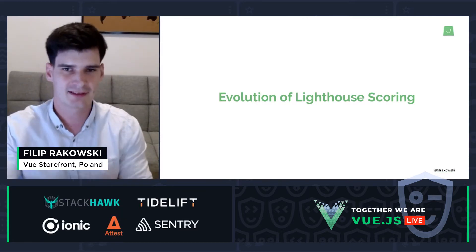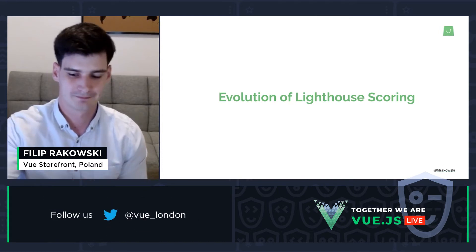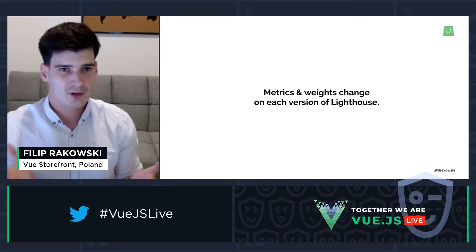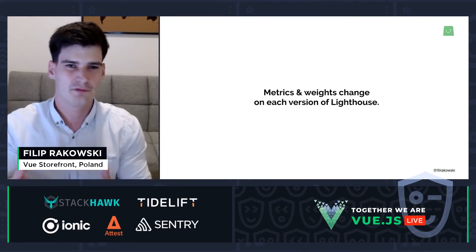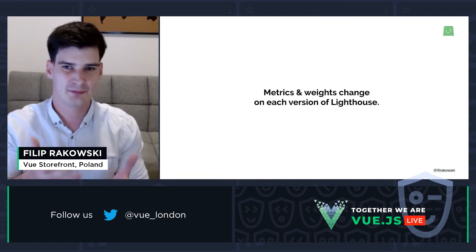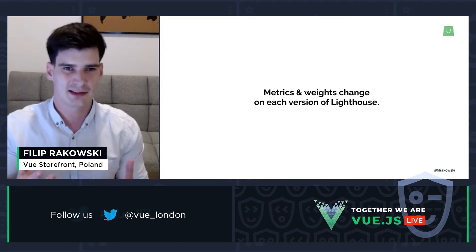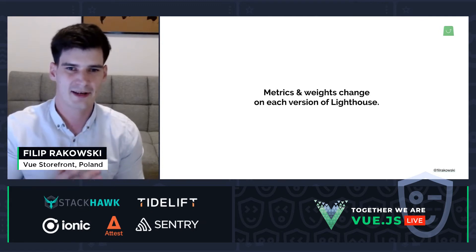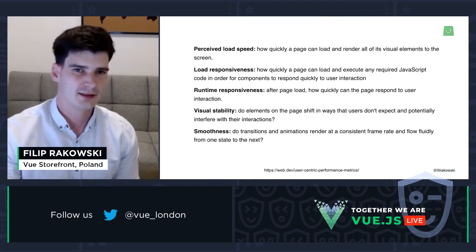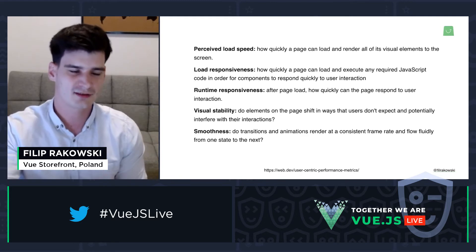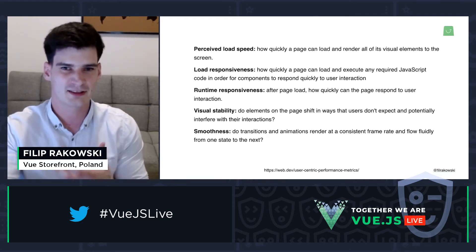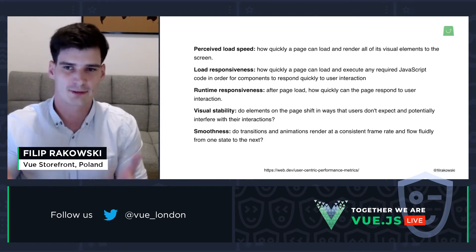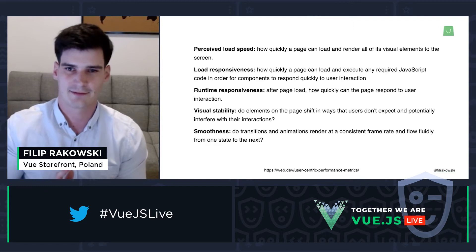There's one important thing everyone using Lighthouse needs to be aware of: both the metrics and their weights change over time — they are not persistent. Over time Google learns new things about the impact of certain metrics on user experience, and they periodically update the Lighthouse scoring algorithm to be more accurate. With each version, the score more accurately measures and describes the real-world impact of different metrics. Figuring out how each of them influences overall experience is just super hard — this is why we're on Lighthouse 7 and we'll probably have Lighthouse 17 as well.